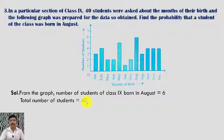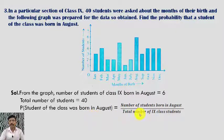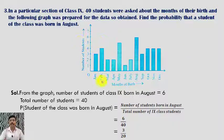The probability that a student of the class was born in August equals the number of students born in August divided by the total number of Class 9 students, which is 6 divided by 40. Simplifying by dividing both by 2, we get 3/20. Therefore, the probability of a student of the class being born in August is 3/20.